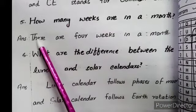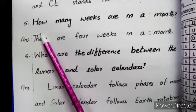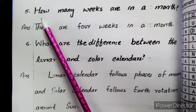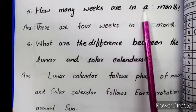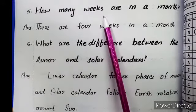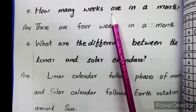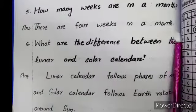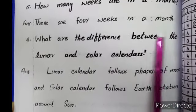Question 5: How many weeks are in a month? There are four weeks in a month.